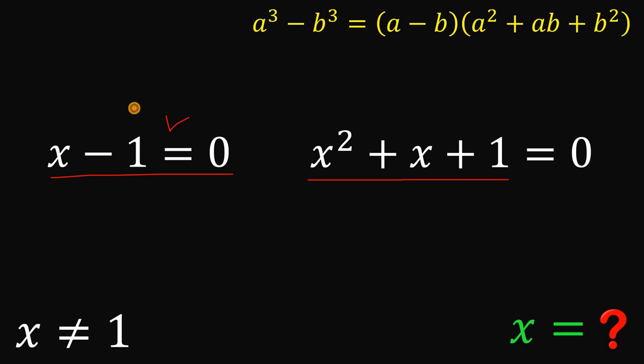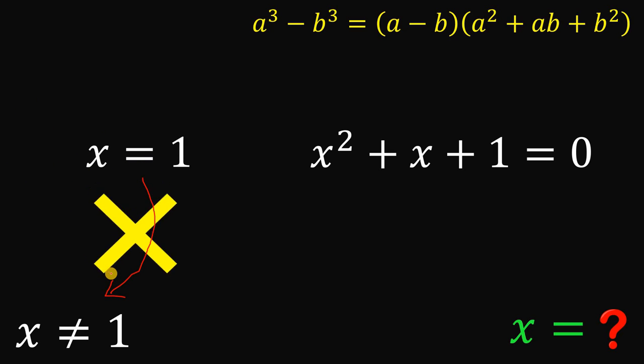Now using the first equation, let's add 1 on both sides to solve for the value of x. If we do that, we get x equals 1. But we know that x cannot be equal to 1. So x equals 1 is definitely not part of our solution.